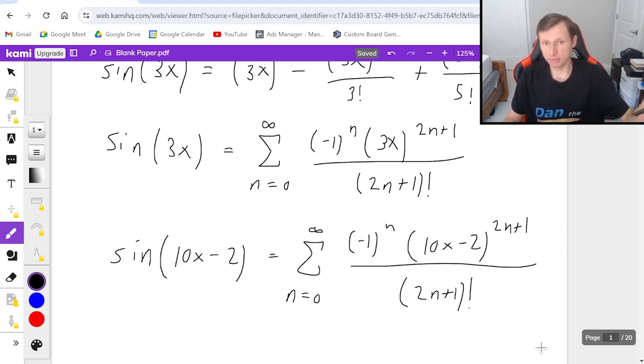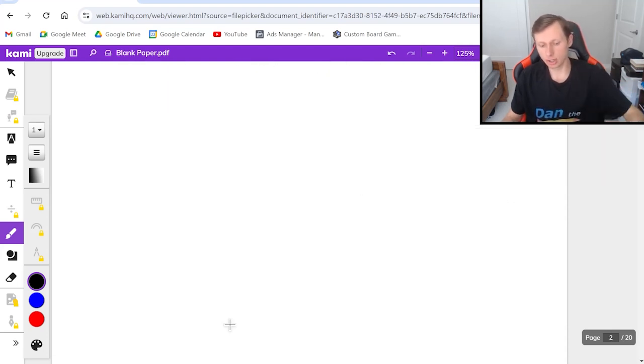Works for any of the Taylor series, by the way. It can be cosine x, can be e to the x, can be the natural log of 1 plus x. Any of those, these shortcut rules will work. But let's talk about another shortcut rule. What if I have 4x times sine of x?